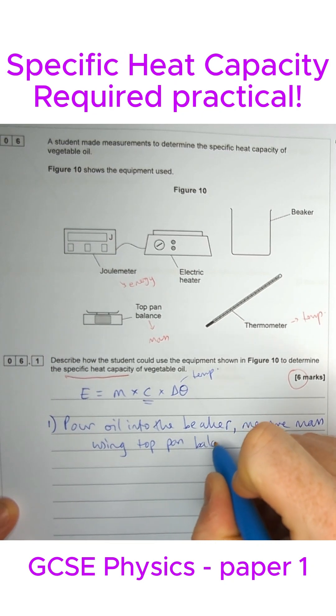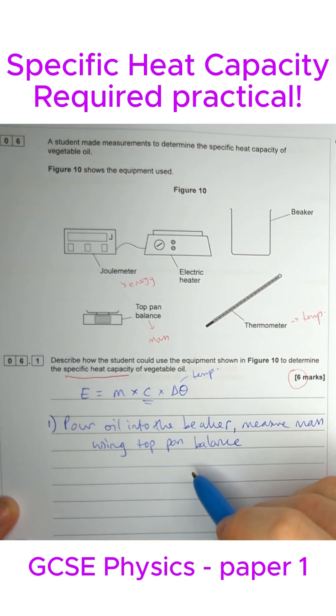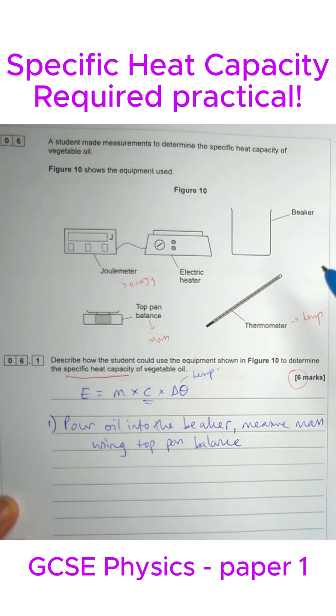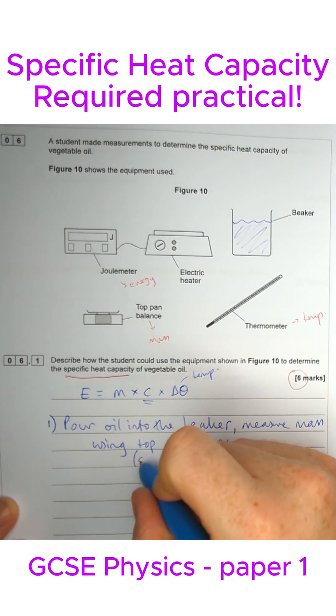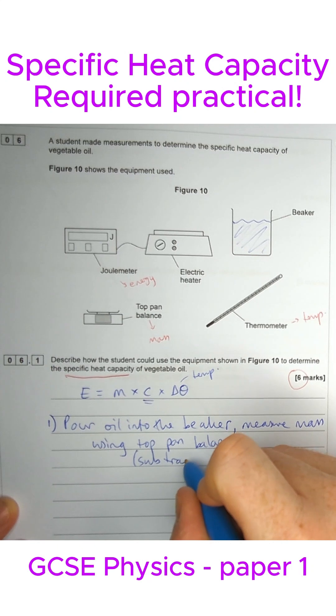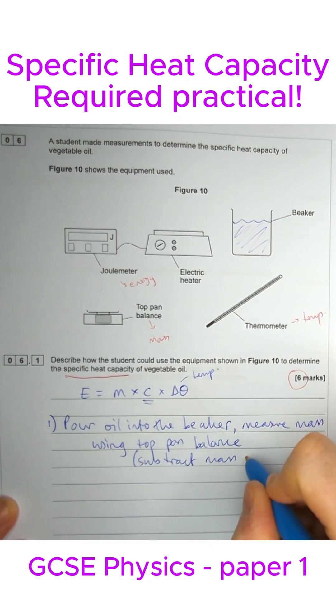You don't necessarily have to mention this next bit if you don't want to, but to measure the top pan balance, you're then going to measure the mass of the beaker as well. You could say something like subtract the mass of the beaker so that you've just got the mass of the oil.